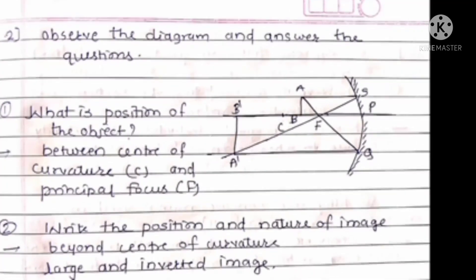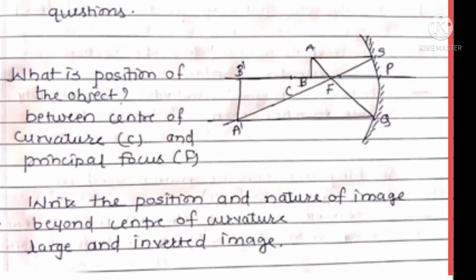Next question: Observe the diagram and answer the question. First question: What is position of the object? The position of object AB is in between center of curvature and principal focus.